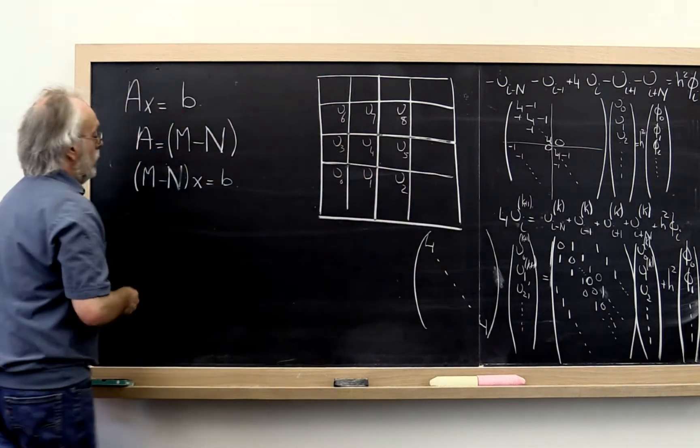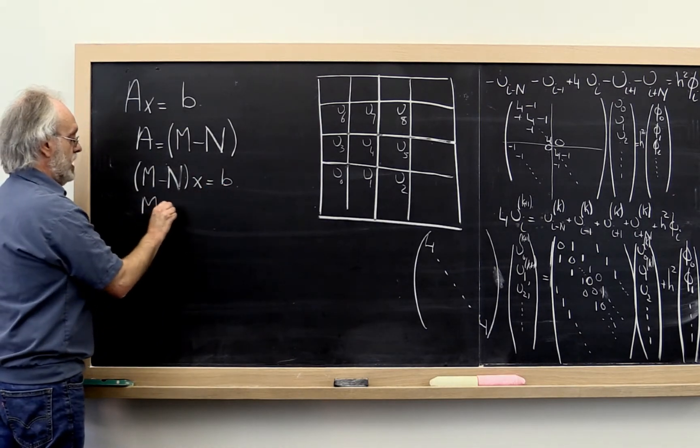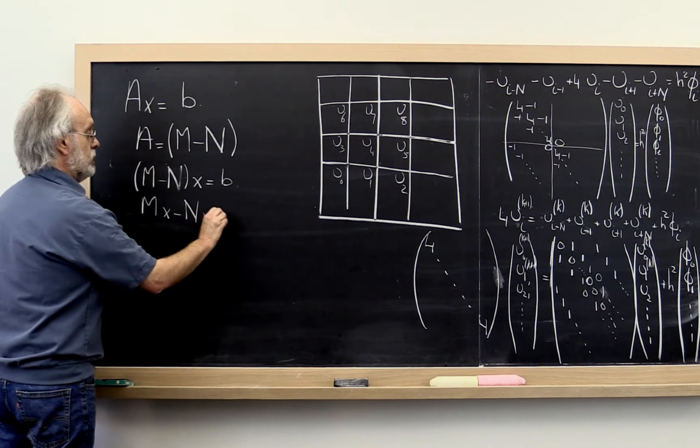Now you can then say, well, I can distribute X. So I get M times X minus N times X is equal to B.